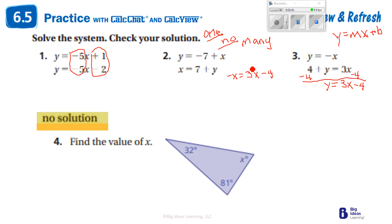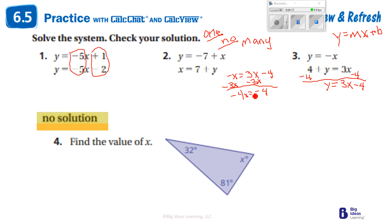I have x's on both sides, so I'll subtract 3x from both sides. That gives me −3x and −x combined as −4x on the left. Bringing down the negative four, I now divide both sides by negative four. Negative four divided by negative four is one, so x equals 1.